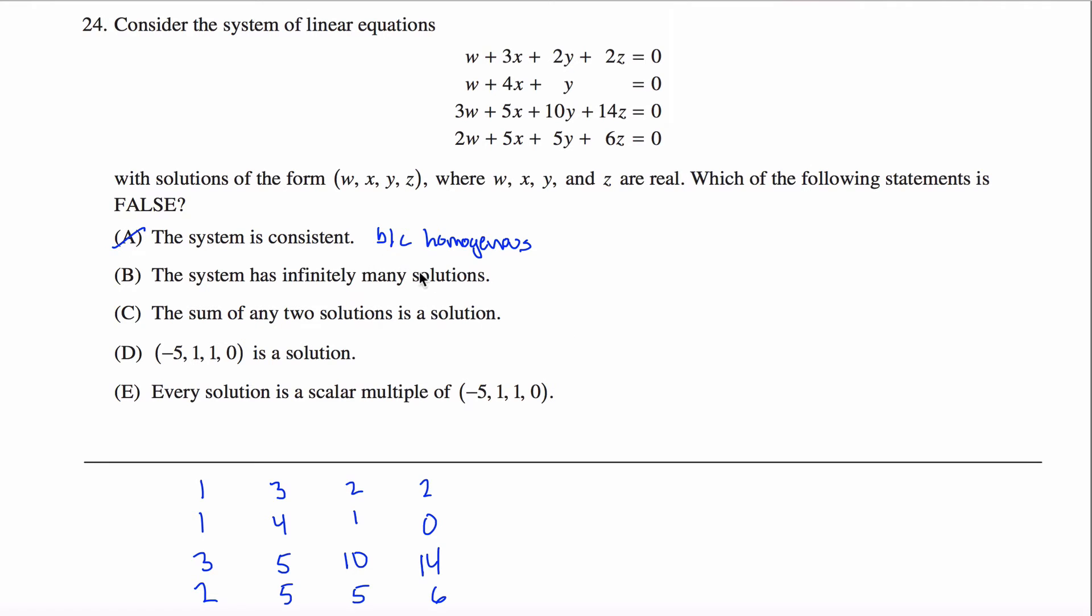The system has infinitely many solutions, I don't know yet. The way I can answer that is if I have a free variable, it'll have infinitely many solutions. So when I row reduce this guy, if I can get rid of any of the equations, it'll end up having infinitely many solutions.